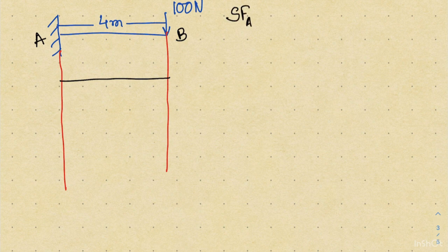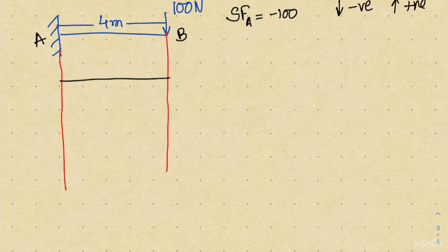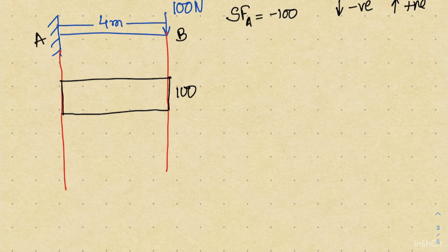The shear force at point A will be minus 100. It is negative because my sign convention states that a downward load means negative shear force and an upward load means positive shear force. The shear force remains 100 throughout and then becomes 0, which can be validated by the reaction at the support. For a cantilever we can ignore the reaction, but for a simply supported structure we must calculate it.